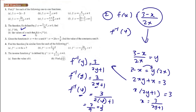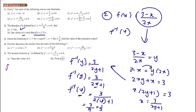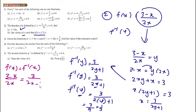Now find the value of x such that f(x) equals f inverse of x. We set f(x) equal to f inverse of x. f(x) is (3 minus x) over 2x, and f inverse of x is 3 over (2x plus 1).